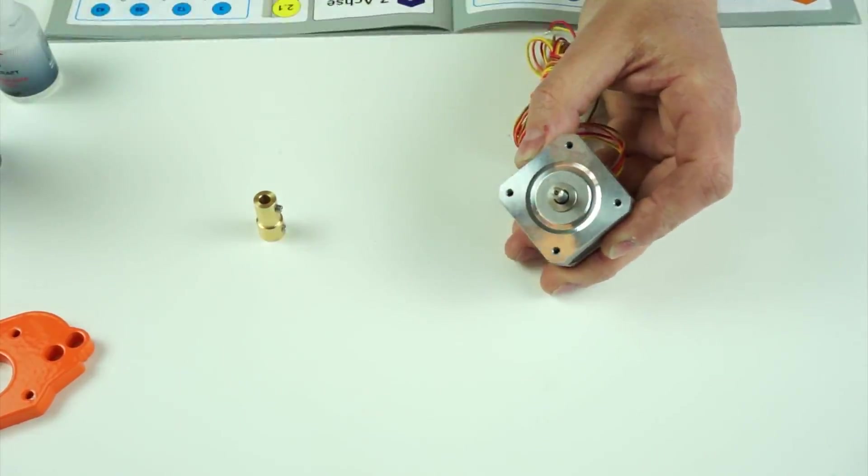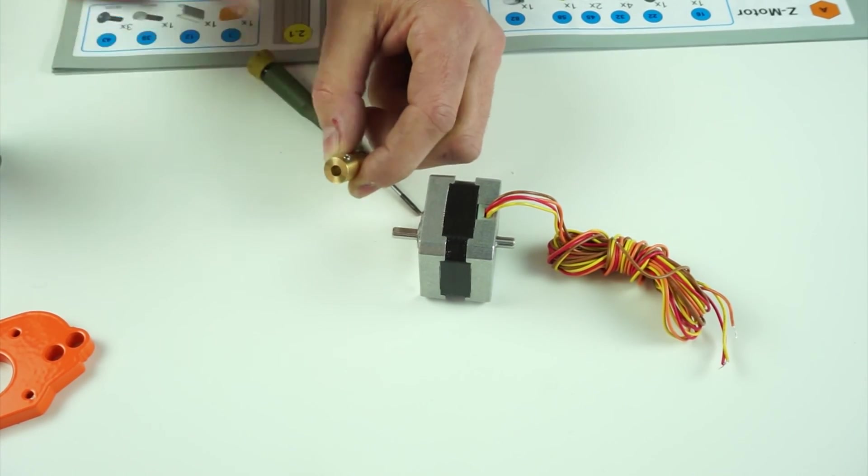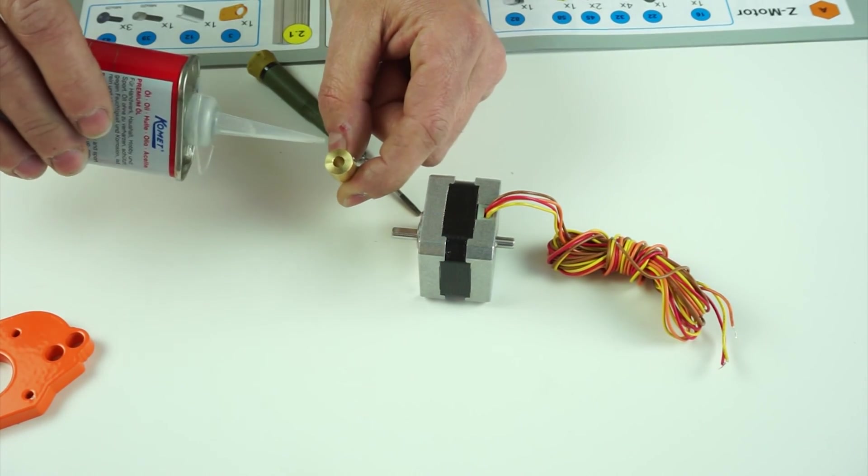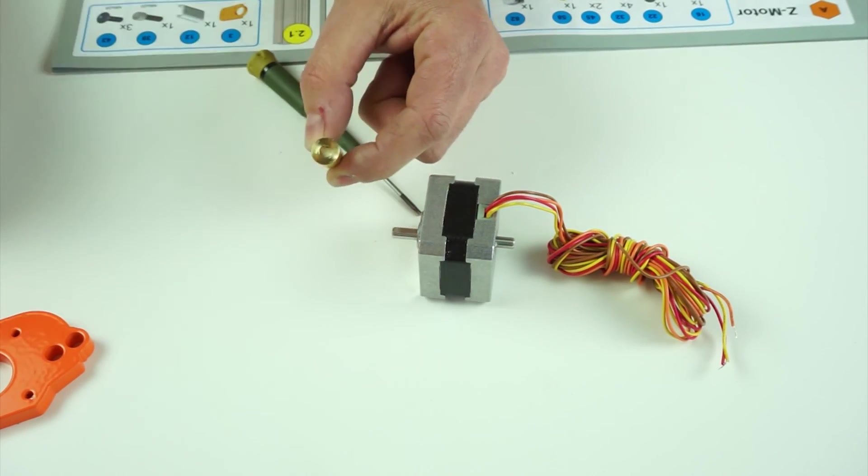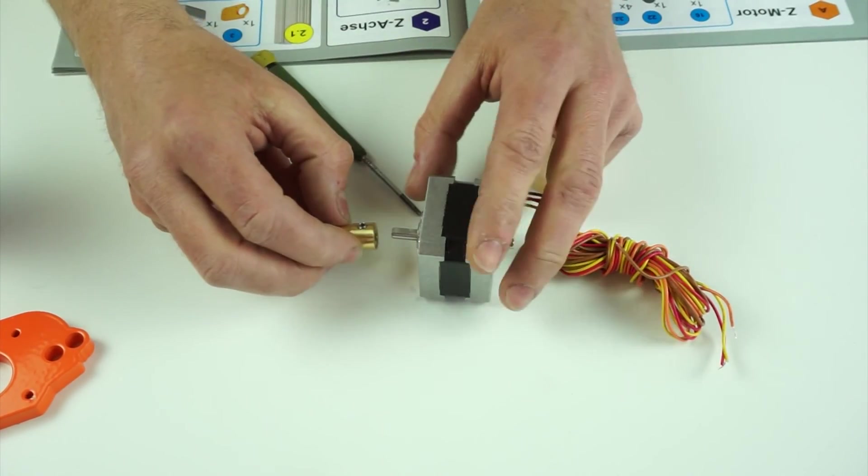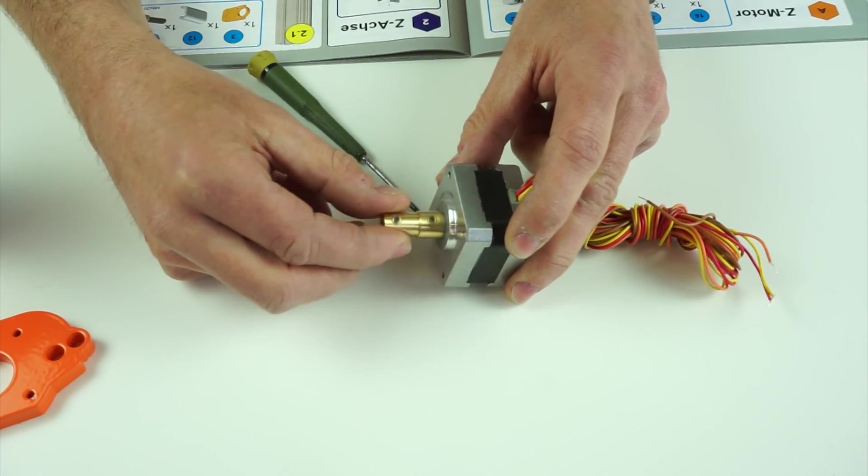Before you attach the axis connector, part number 58, to the motor, you need to place a thin layer of three-in-one oil on the bottom of the connector that makes contact with the axial bearing you previously installed. Slide the connector onto the motor shaft and ensure the flat spot on the motor shaft aligns with the set screws.